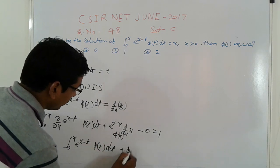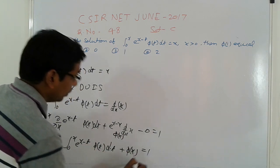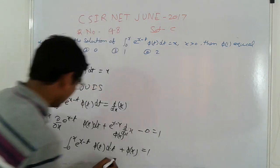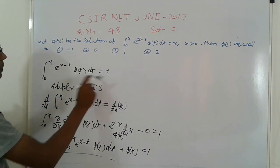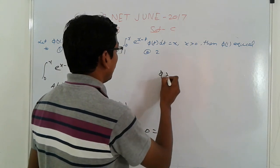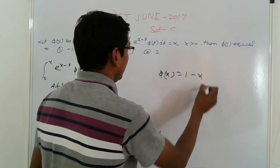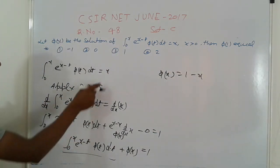We get ∫₀ˣ e^(x-t) φ(t) dt, which equals x as already given. So φ(x) + x = 1. Therefore, φ(x) = 1 - x.